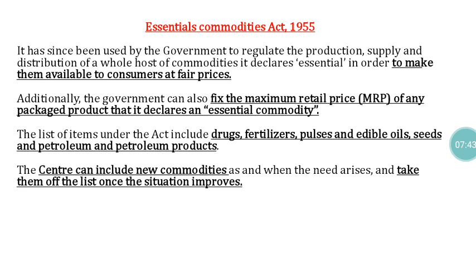The Essential Commodities Act was passed in Parliament in 1955. It is mainly used by the government to regulate the production, supply, and distribution of commodities declared as essential, in order to make them available to consumers at fair prices. If the price of any high-demand material increases, the government places that material under the Essential Commodities Act and fixes the price to offer it to consumers at a fair price.